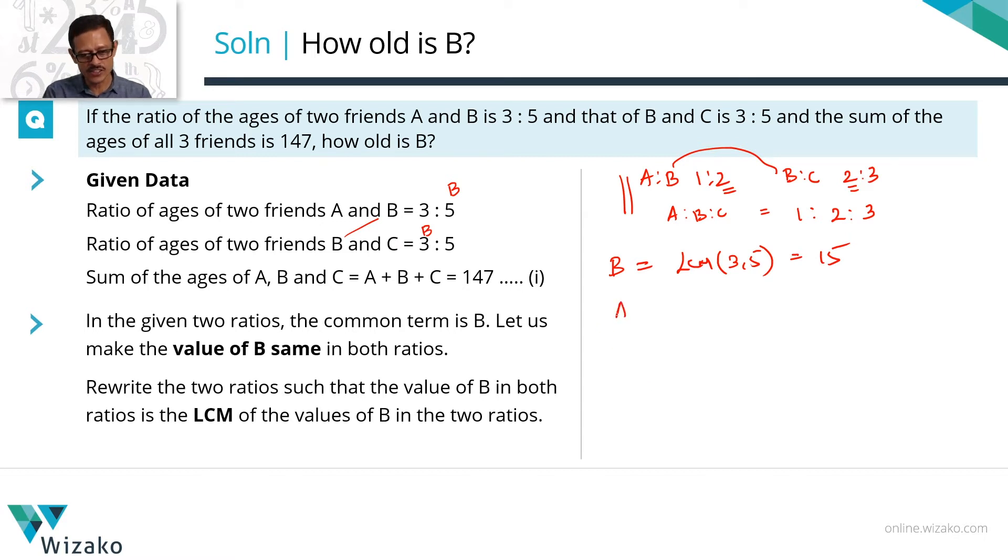So I'm going to start with the first ratio. First ratio is A is to B. We know that is 3 is to 5. If I have to make this value 15, I need to multiply this entire ratio with 3. So A is to B will become 9 is to 15 which still is in the same ratio 3 is to 5.